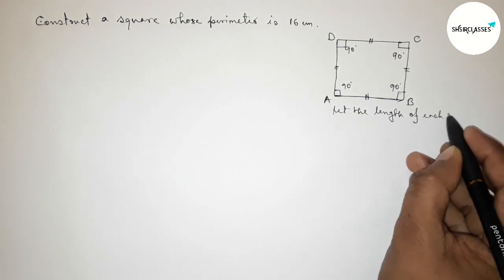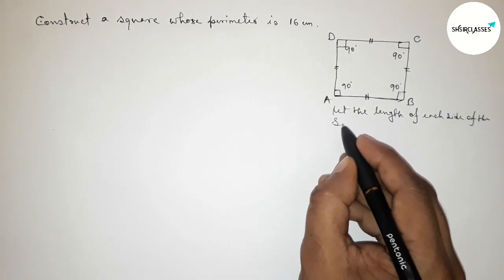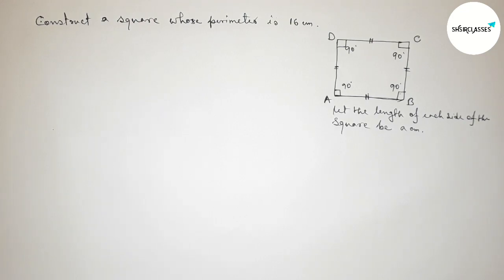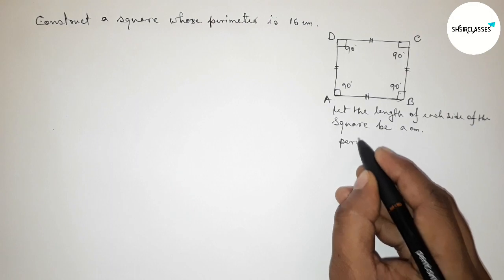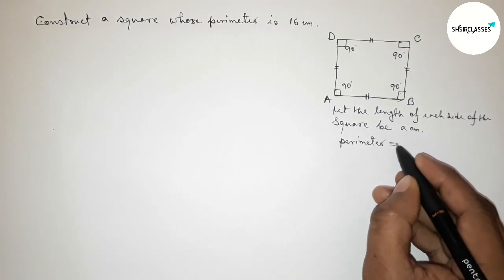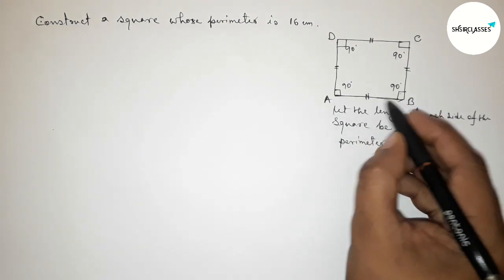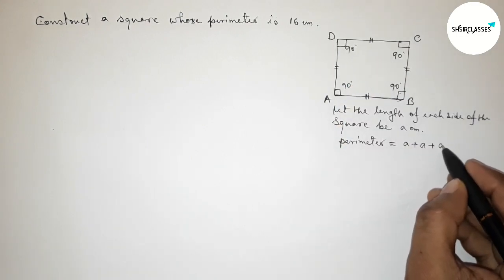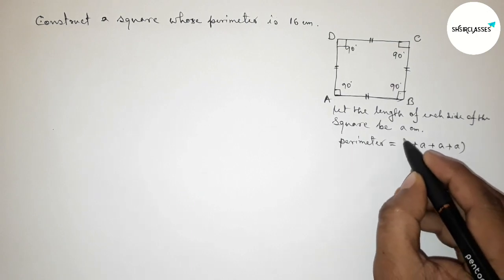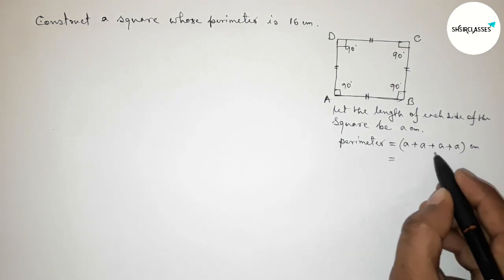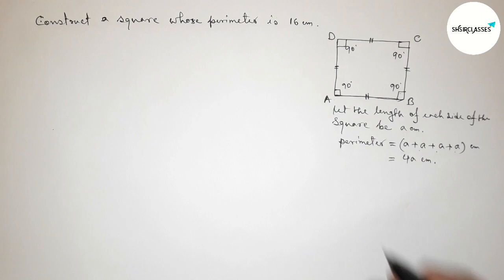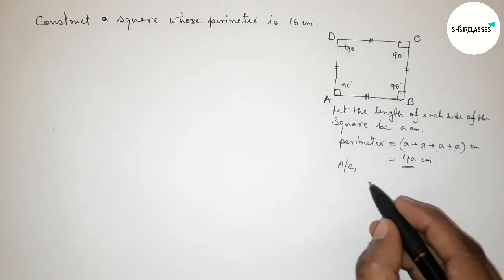Let the length of each side of the square be 'a' centimeters. Now finding the perimeter of the square — perimeter equals the sum of four sides: a + a + a + a, which gives us a total of 4a centimeters.